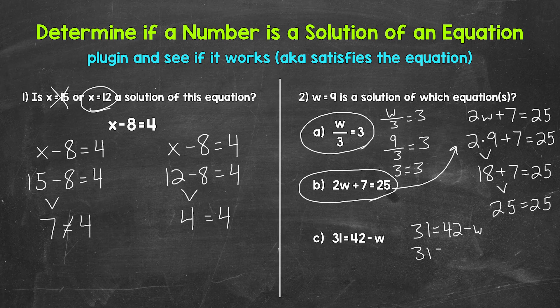42 minus nine. So now we can subtract and see if this equals 31. 42 minus nine is 33. So nine is not a solution of this equation. It did not work out. So C is not correct.